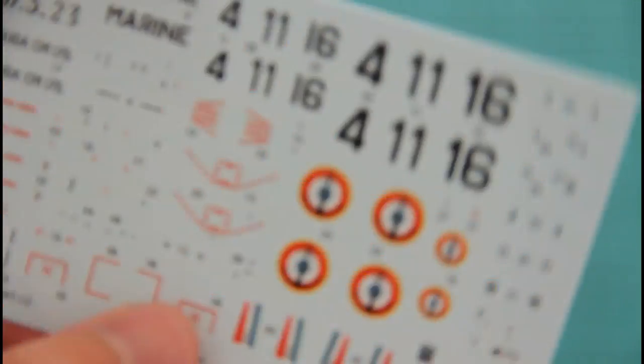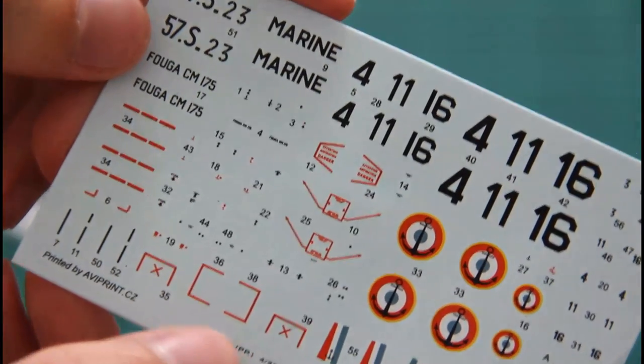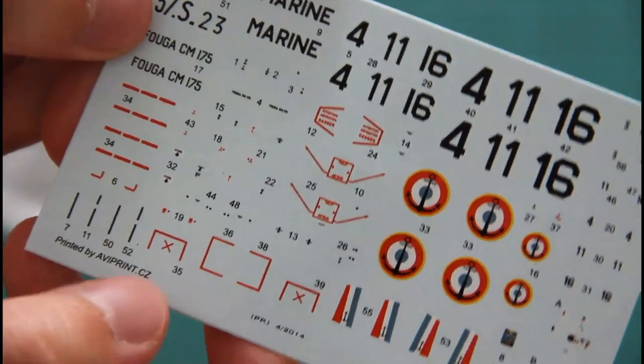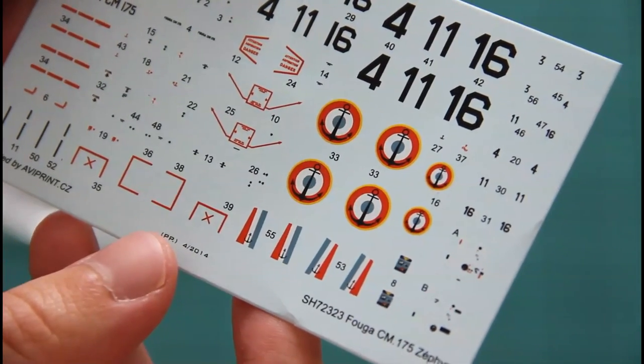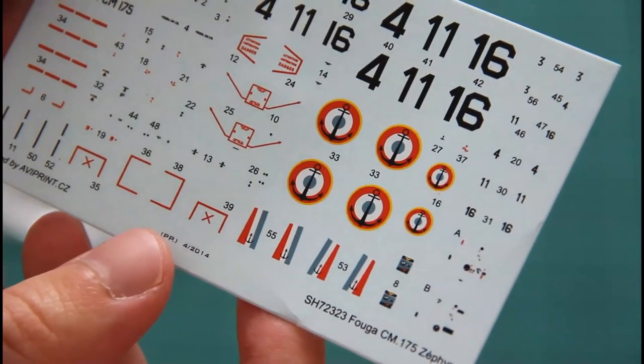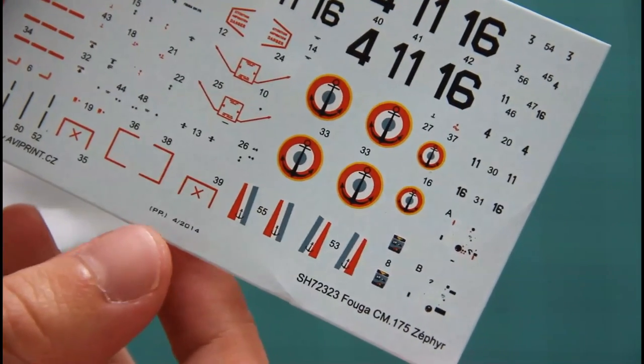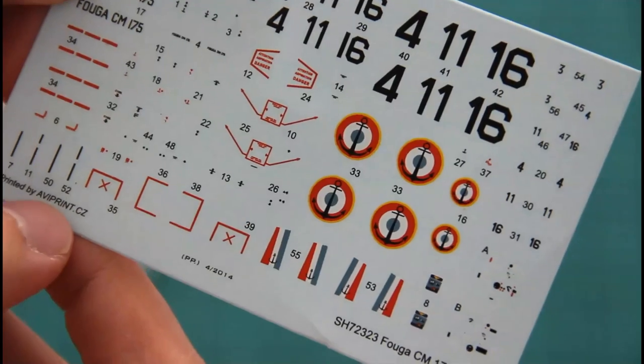And last but not least is the decal sheet, which is not big but features all necessary symbols for four marking options. As you can see, even some minor stencils and even decals for the dashboard and some side panels. Printing quality is very good—they are printed by AviPrint.